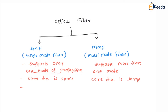In single mode fiber the core diameter is much smaller, but in the case of multi-mode fiber we use a bigger core diameter as compared to the single mode fiber.